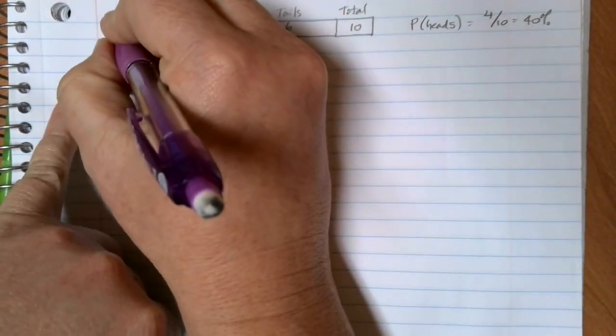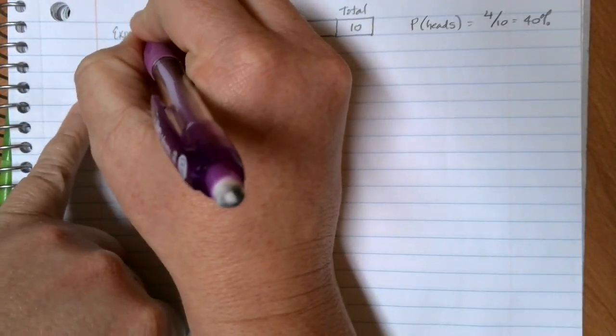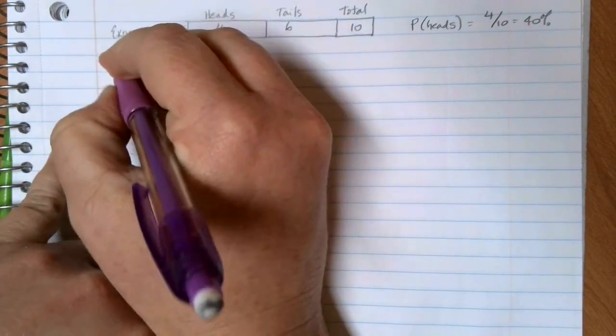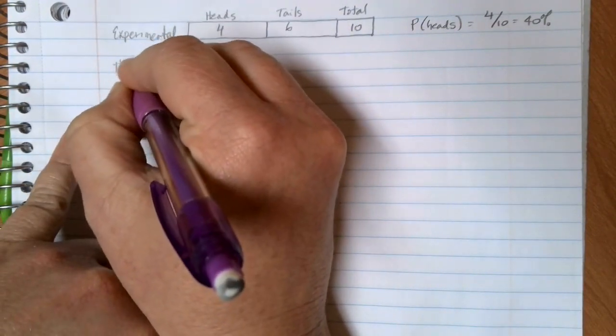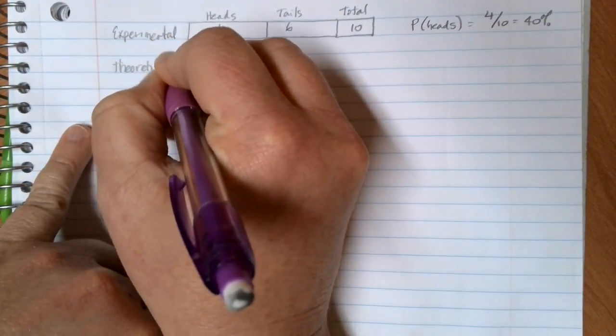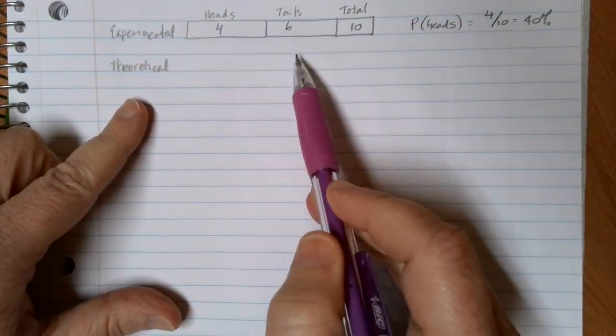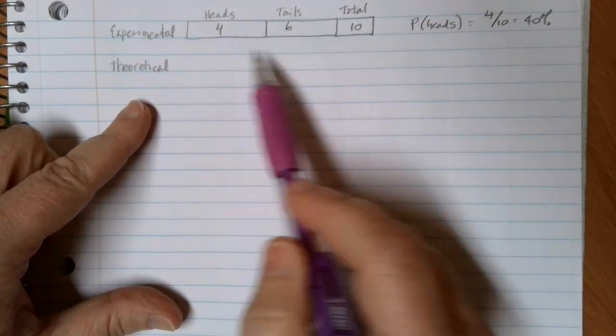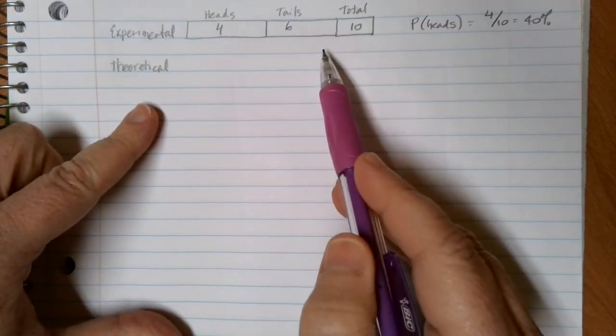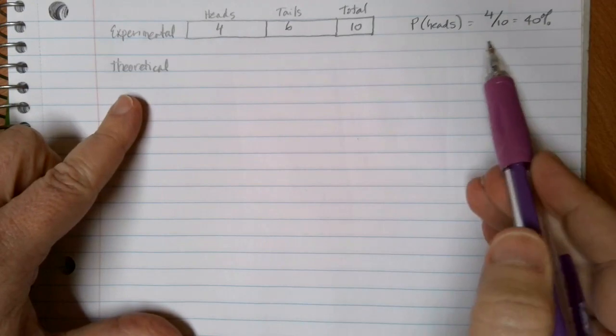This is the difference between what we call experimental and theoretical probability. The contingency tables that we did in the last section were able to break down information based on a survey or an experiment or something along those lines. And we use that collected data to figure out probabilities.